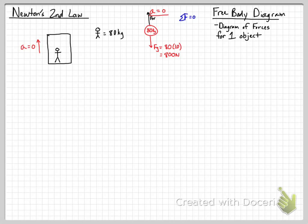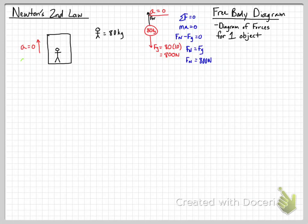Since we know that the acceleration is 0, that should tell us the net force is 0. Because the acceleration is 0, the net force is 0, which means Fn minus Fg should equal 0, and therefore Fn should equal Fg. So the normal force equals 800 newtons.